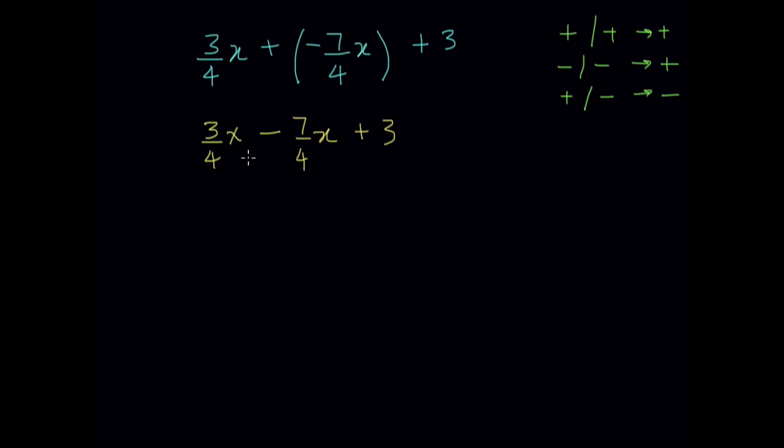So now all we have to do is 3x minus 7x. We can just write that together over 4 because the denominator is the same, plus 3. And 3x minus 7x gives us negative 4x over 4 plus 3. The 3 remains because it is the constant in the equation.